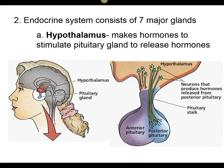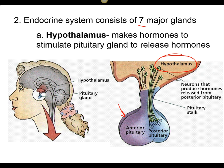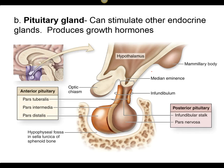We're going to go over seven of the major glands. The hypothalamus is kind of like the coach of the endocrine system. I think of the pituitary gland as the quarterback. The hypothalamus is within the brain and it activates the pituitary gland and tells it what to do — it's a gland that tells another gland what to secrete.